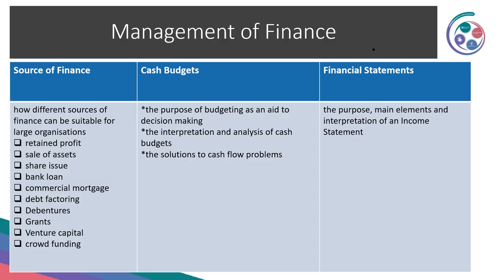Lastly, the Management of Finance section has also been cut back significantly. You're asked to describe the sources of finance — a long list of options. Cash budgets — the purpose of producing a cash budget, interpretation and analysis of the cash budget, and solutions to cash flow problems. Financial statements — the purpose, main elements, and interpretation of an income statement. We're going to focus on cash budgets in this session.